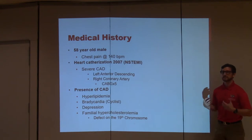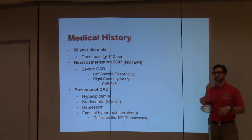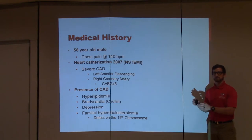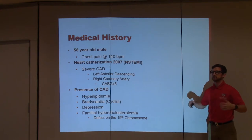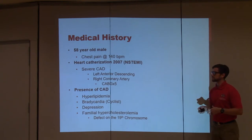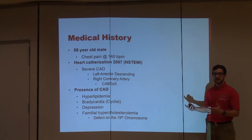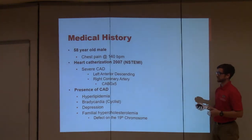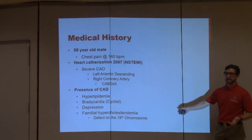Fast-forwarding back to 2018: he had hyperlipidemia and bradycardia, but he was a cyclist and exercising regularly, so that's fairly normal. He also had depression and familial hypercholesterolemia — a defect of the 19th chromosome. In short, this recycles LDL, so once you put LDL into your body, it doesn't come out — it just recycles over and over. You can imagine how bad that would be, continuously taking in cholesterol and LDL. That's why he was on statins and trying to change his diet to improve his cholesterol levels because of genetics — he was just dealt a bad hand.